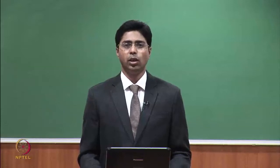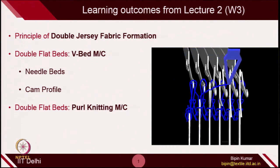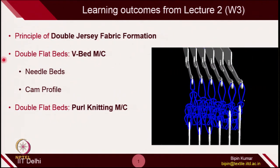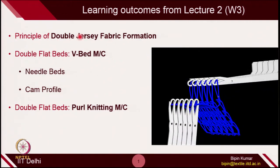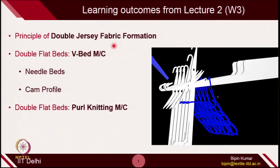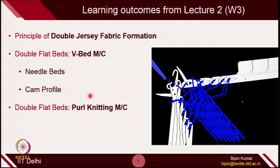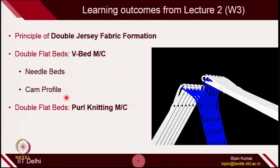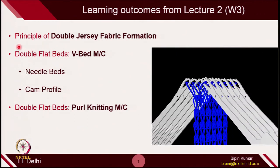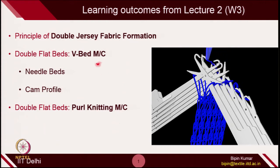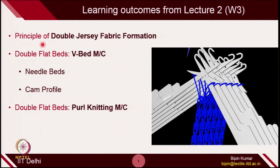To create double jersey fabrics, we need double bed machines. In this particular lecture, we are going to focus on double bed machines. We will cover the principle of creating double jersey fabric, then understand double flatbed machines — especially the V-bed machine, which is the most popular in knitting technologies. We will look at how the beds operate, how the needles are placed, and the profile of the cams responsible for reciprocating needle movements. Apart from that, we will also cover a new kind of machine called purl knitting machines.